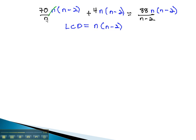When we do this, the n's divide out, and we're left with 70 times n minus 2, plus 4n times n minus 2, equals, with the n minus 2's dividing out, 88n.